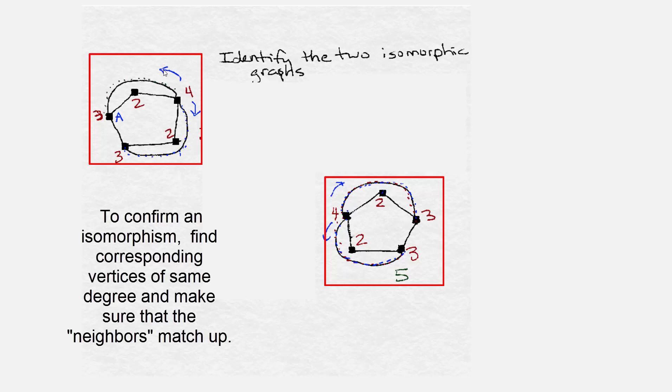So I'm going to label it because the only way to really confirm that I have an isomorphism is to actually create the isomorphism. So I have ABCD up there. Let's call this F, G, H, I, and J down here.